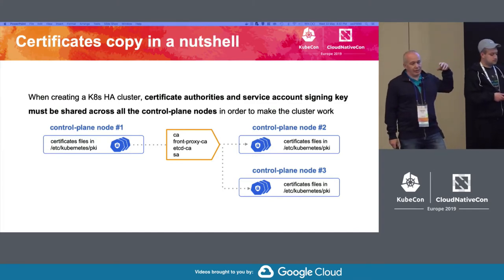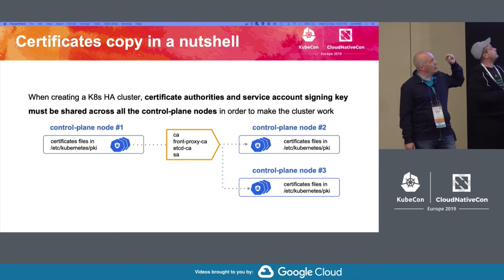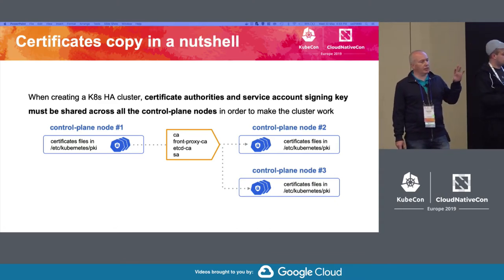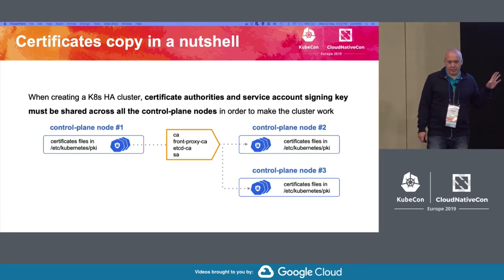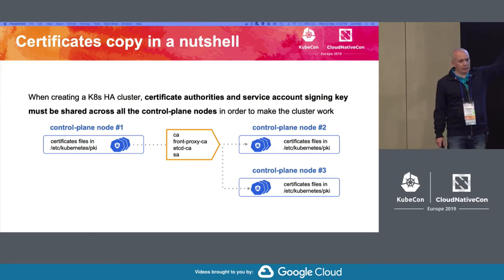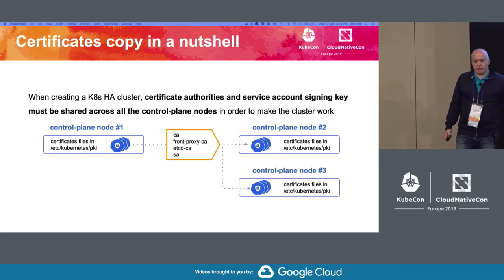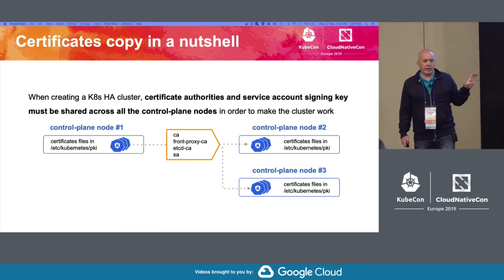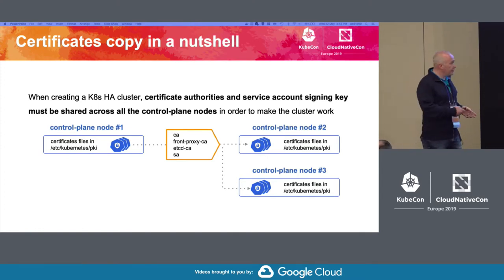When you create a high availability cluster, it's important to keep in mind that you have to share some certificates - your certificate authority and the account signing key - among all the control plane nodes in order to get your cluster working. The best approach that fits the kubeadm workflow is to create the certificate on the first node during init, then copy the certificates to the second and third control plane before joining them to the cluster. Before v1.14 this operation was manual and error-prone.